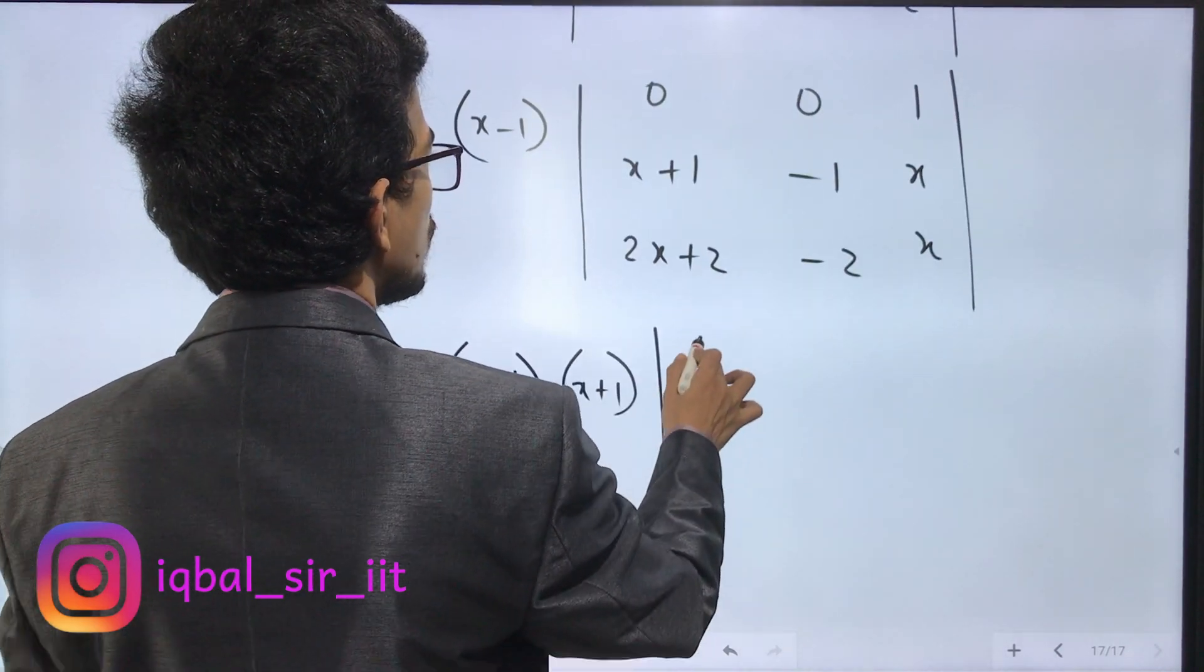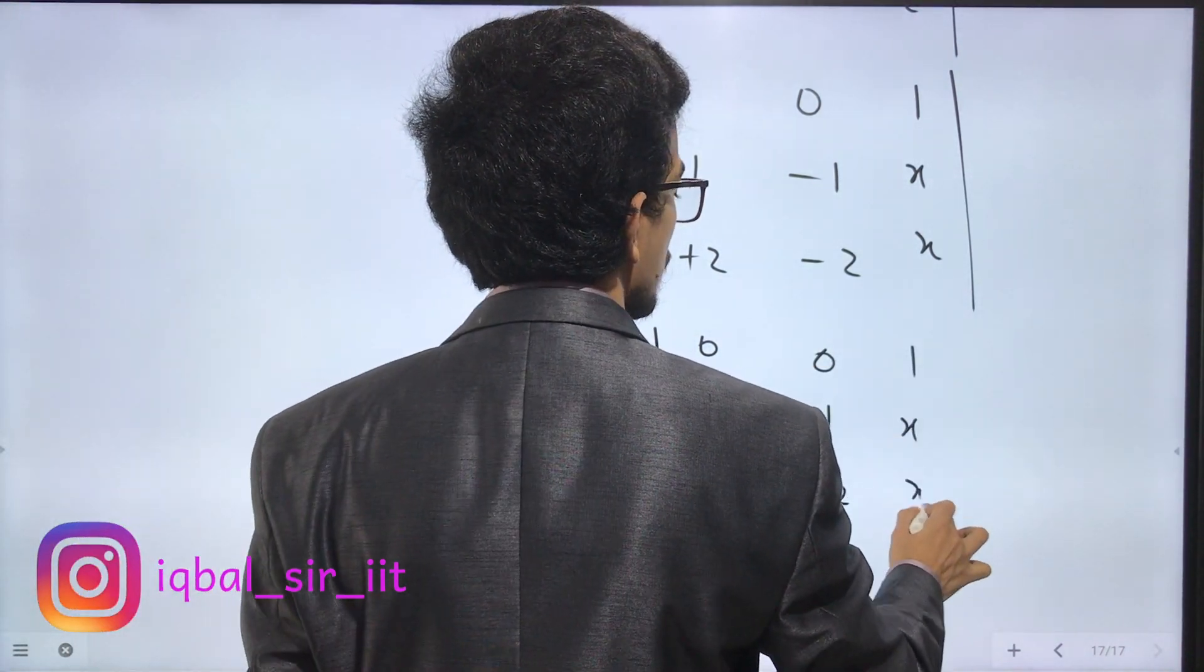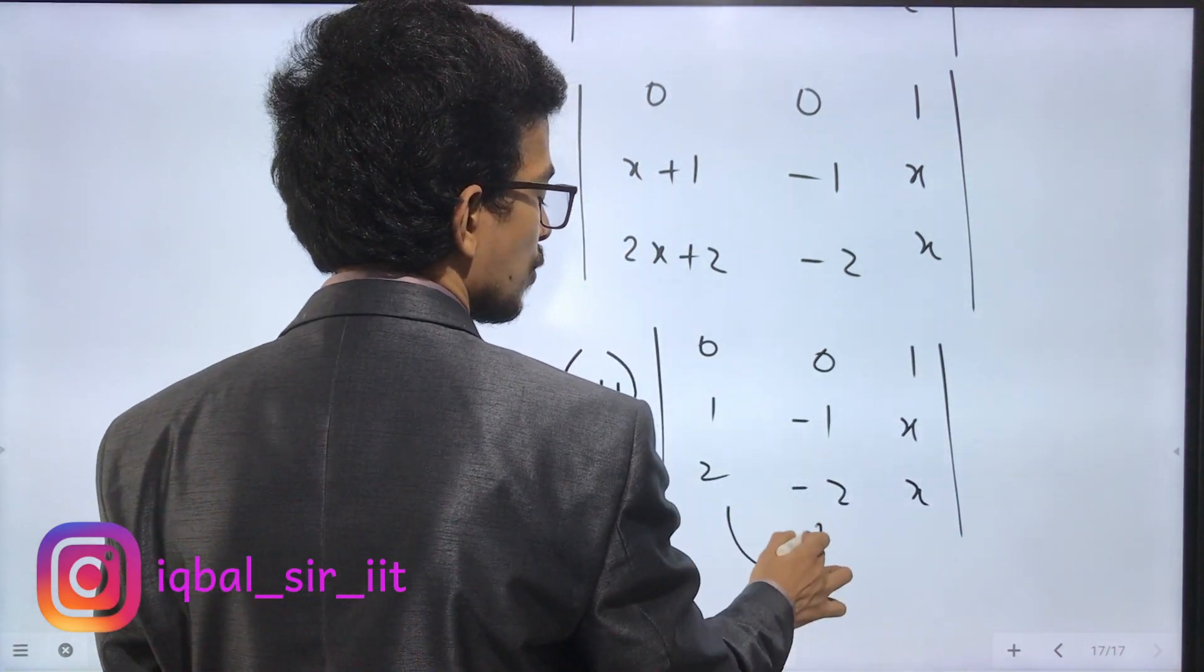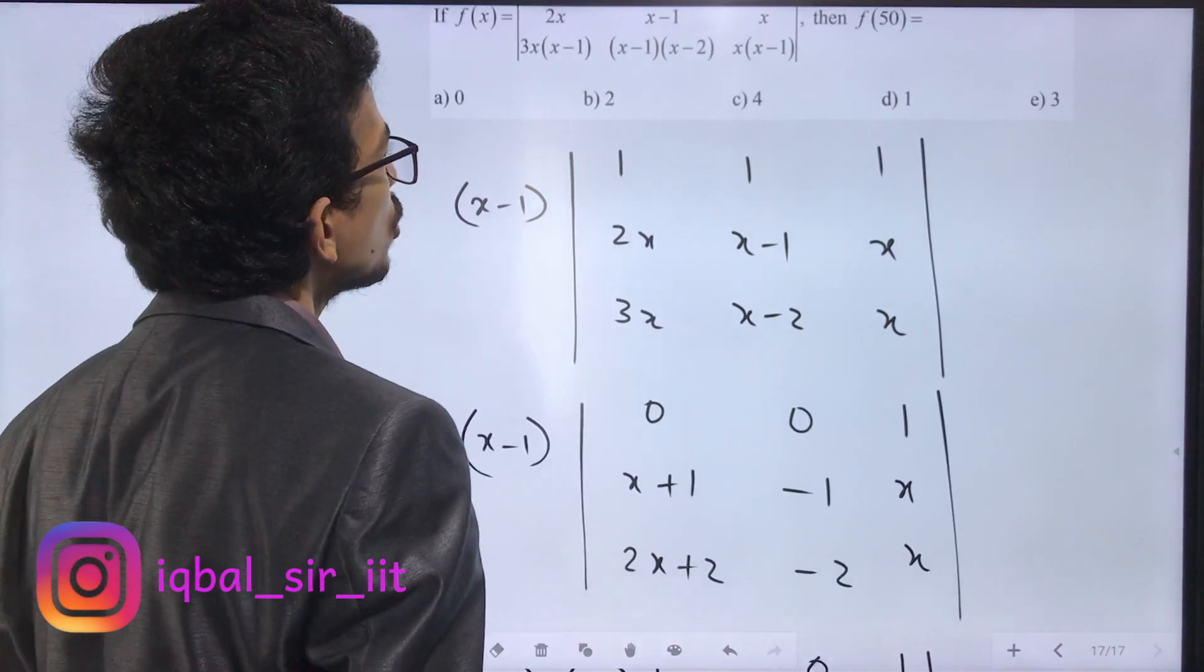This gives the matrix with entries [0, 1, 2; 0, -1, -2; 1, x, x]. If you have two columns proportional, the answer is zero. Zero is the answer for problem 15.